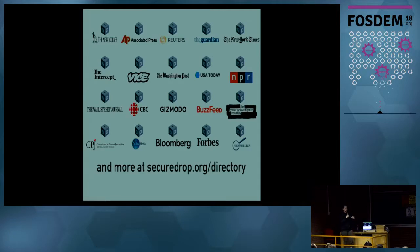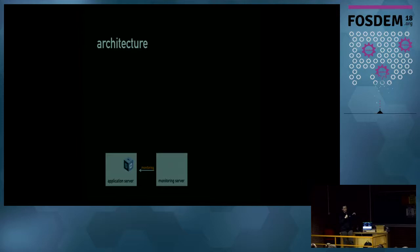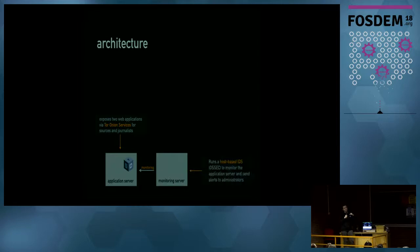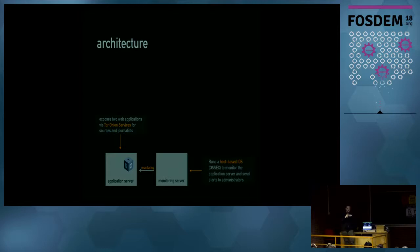So how does it work? We have two servers: one runs the SecureDrop application, and one is just monitoring the first server. Both are Ubuntu server running a GrSecurity kernel, to make exploiting memory corruption vulnerabilities more difficult. The application server exposes two Tor Onion services that are web applications — one for sources, one for journalists — and also exposes Tor Onion services for admins to SSH in. The monitoring server runs a host-based intrusion detection system monitoring the first server, and alerts are sent to administrators at the news organization when unusual activity is seen.